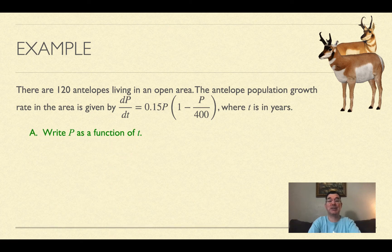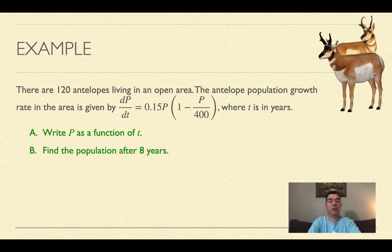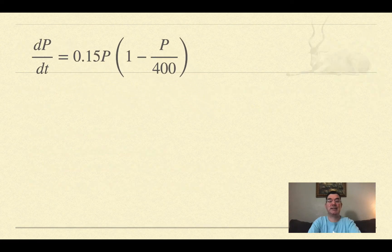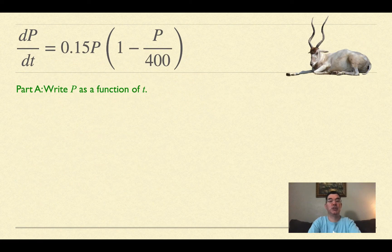We're going to write P as a function of t, find the population after 8 years, find the time taken for the population to increase to 240, and find at what time the population will grow the fastest.